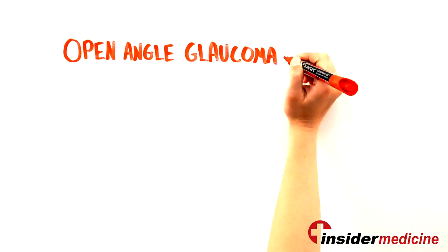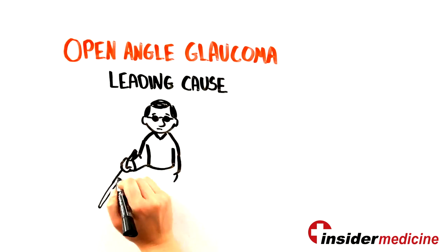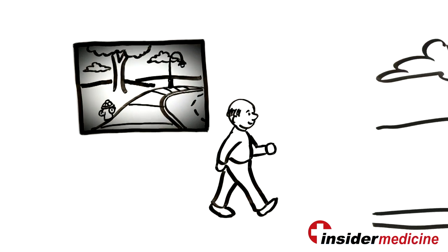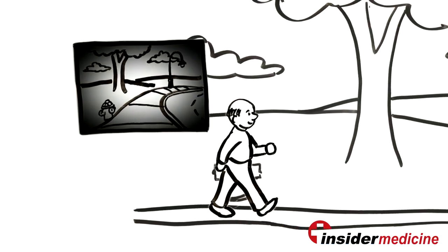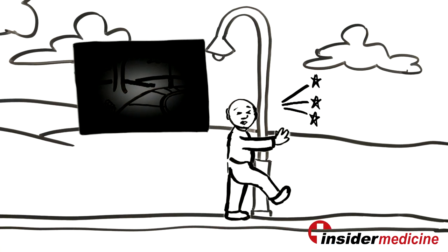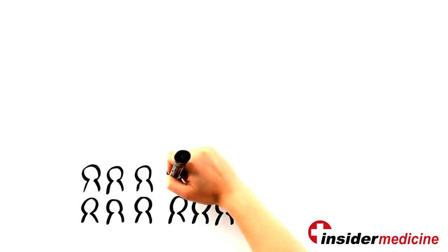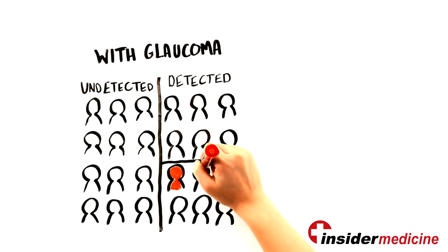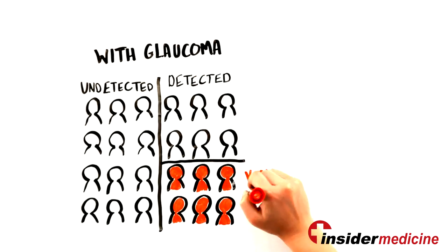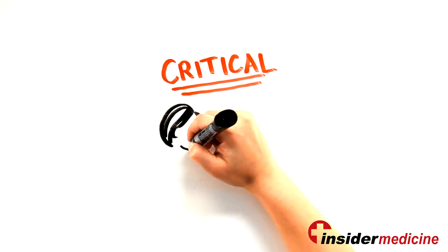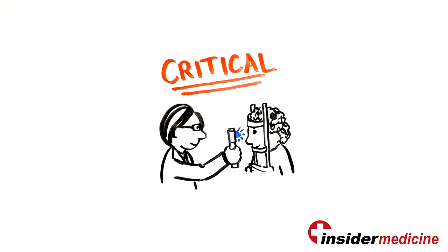Open-angle glaucoma is a leading cause of visual loss, but because it begins by affecting the far periphery of the vision, most patients don't know that they have it until the disease progresses and begins to destroy their central vision. Nearly half of those with glaucoma remain undetected, and unfortunately, 50% of those who are diagnosed have very advanced disease on presentation. This is why it is so critical that at-risk patients be regularly screened for glaucoma.